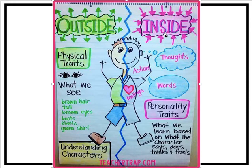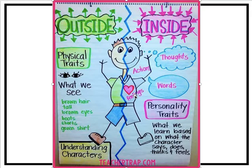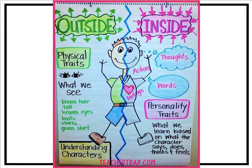But what about on the inside? We're not talking about what they look like if they started bleeding and we saw their blood. No, we're talking about what's going on in their brain and in their heart. How are they feeling? We could talk about what they say, do, think, and feel — and that tells us about their inside character traits.